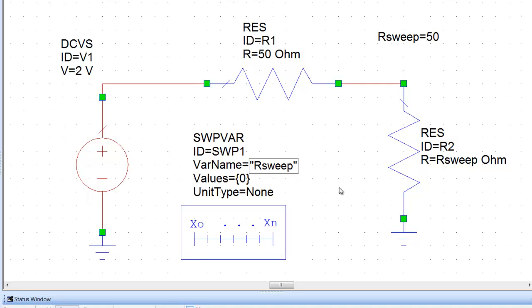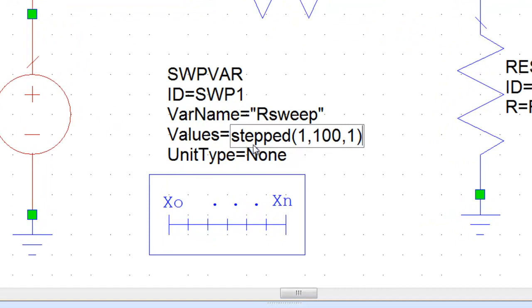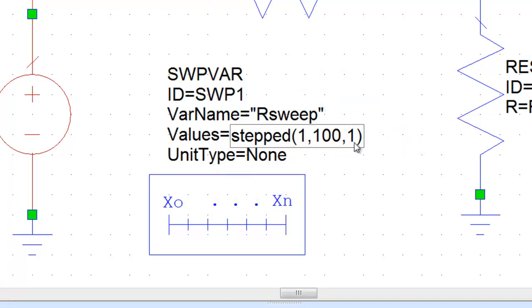Now we need to decide what values this is going to have. So we double click and we just type step 1 to 100 in increments of 1. So this syntax allows you to create a range of values between the 1 which is the starting value, 100 which is the last value in the range, and also specify a step which is 1 in our case. So in this case we are creating 100 values for the load resistor.